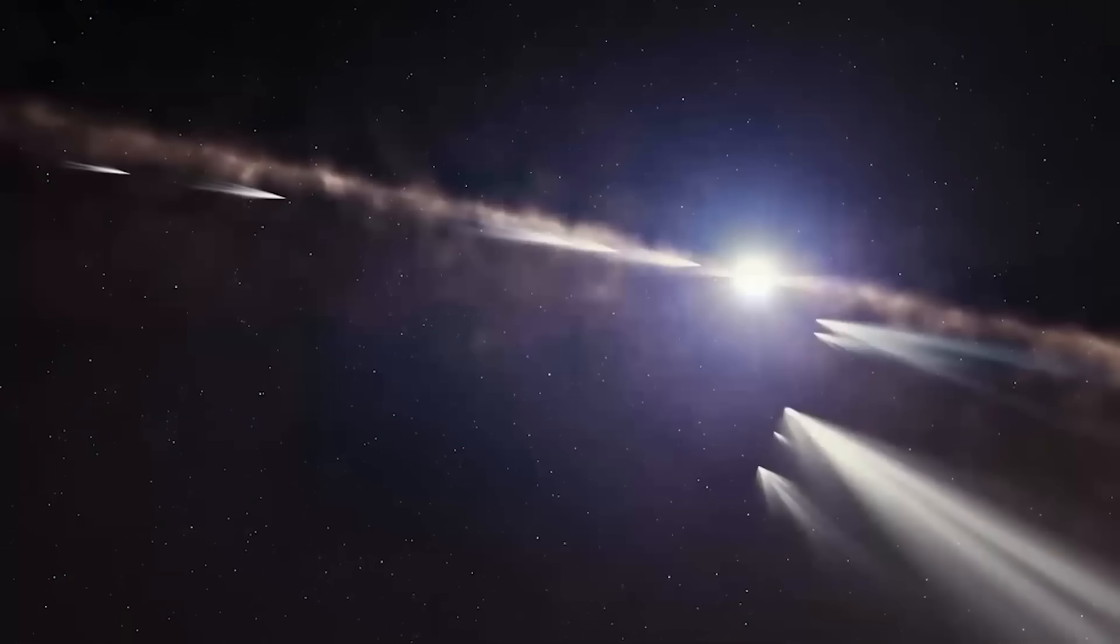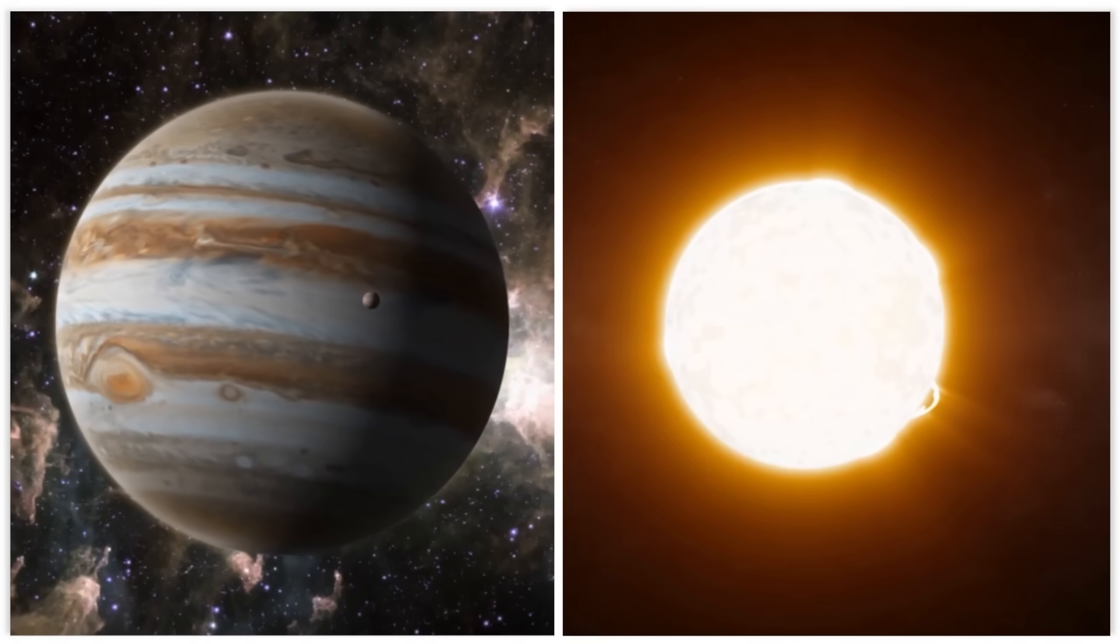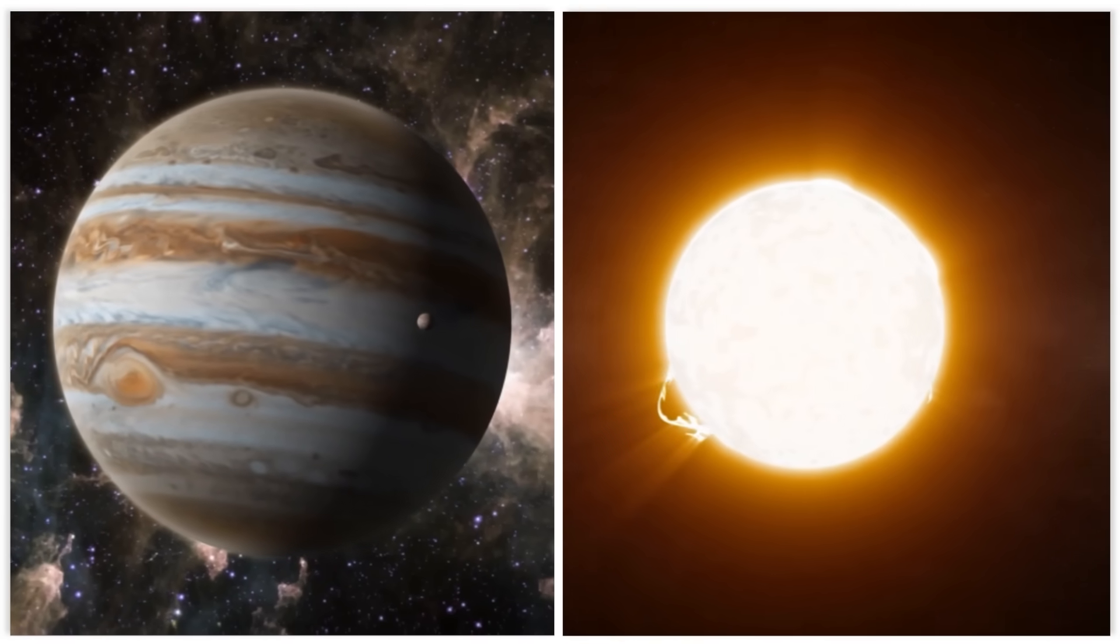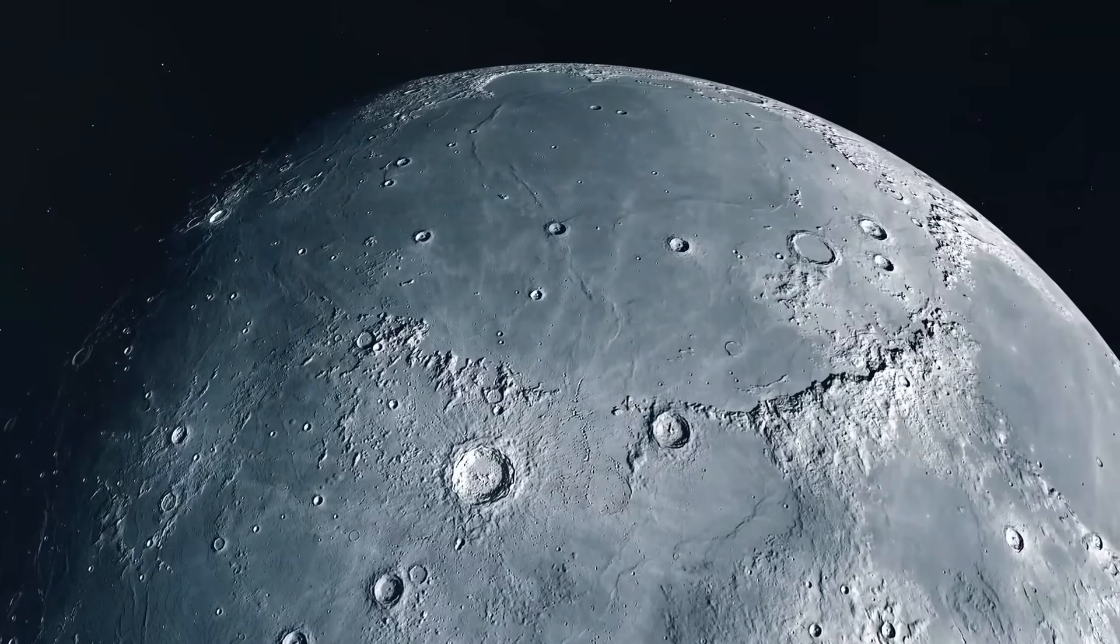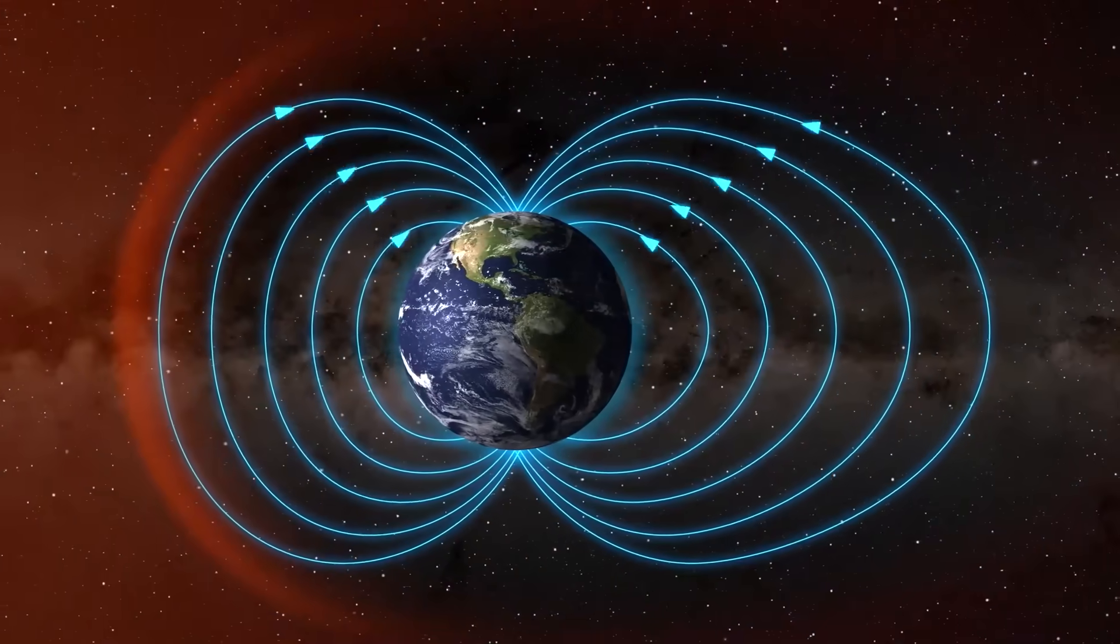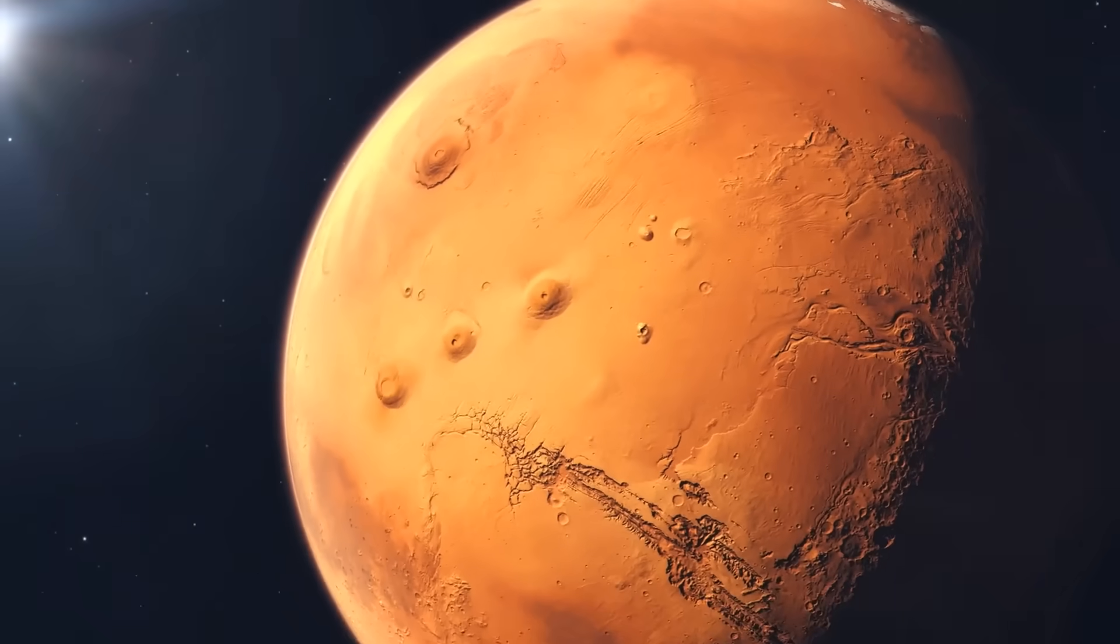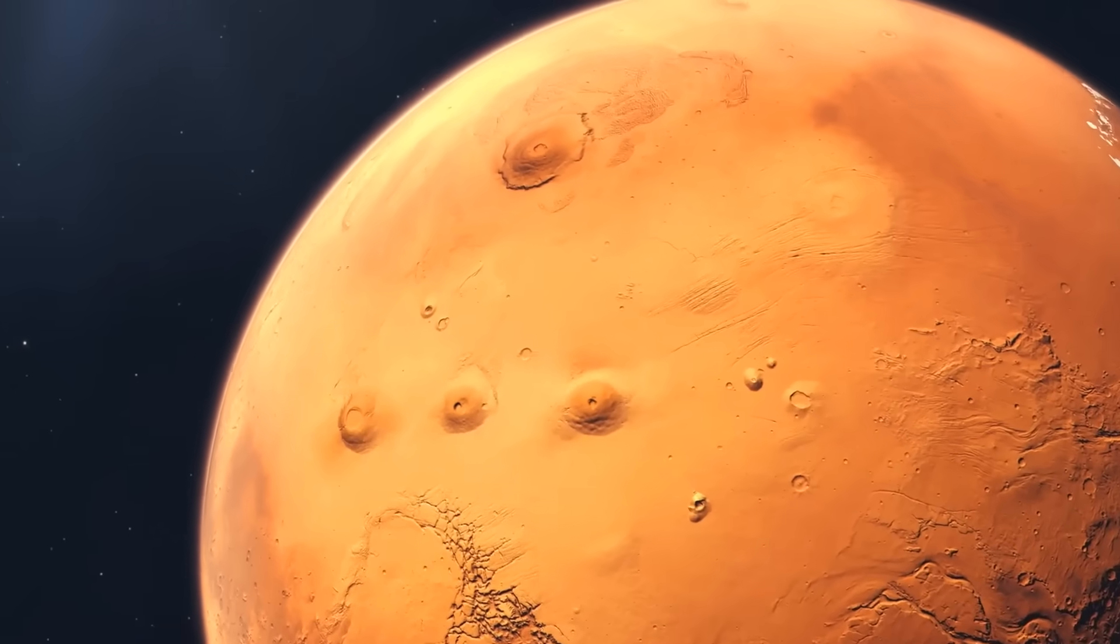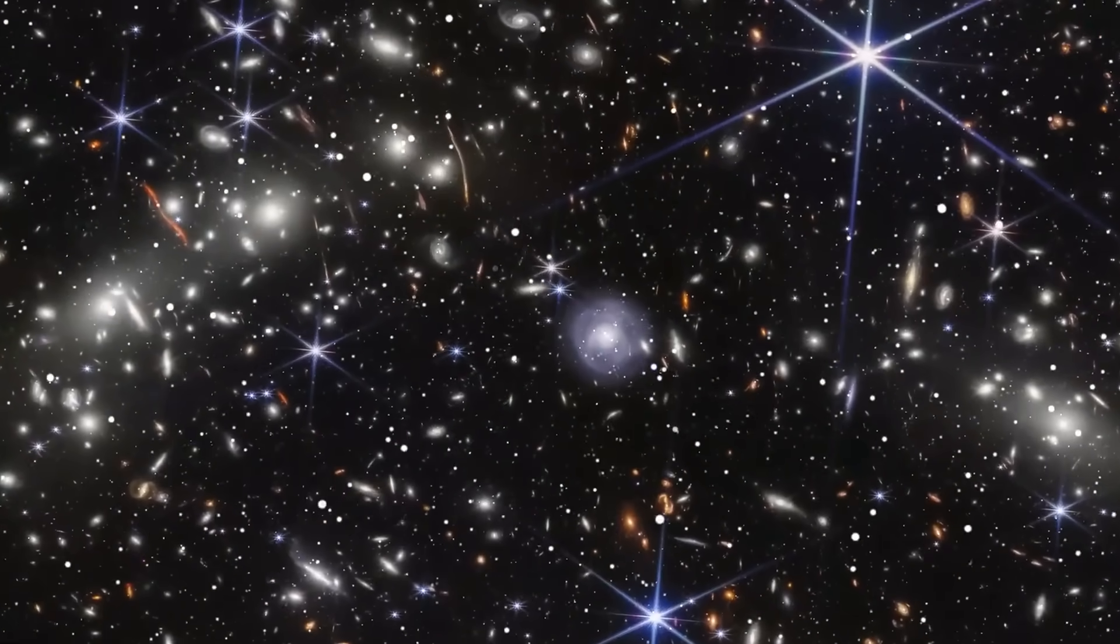Consider the sheer scale of the challenge. A comet's path is a textbook example of a chaotic system. It's a dance influenced by the gravity of the sun, Jupiter and every other planet, even tiny moons along with the subtle push and pull of solar wind and the unpredictable jets of gas from its own melting ice. Each of these factors introduces tiny uncertainties that over millions of miles can compound into massive deviations.